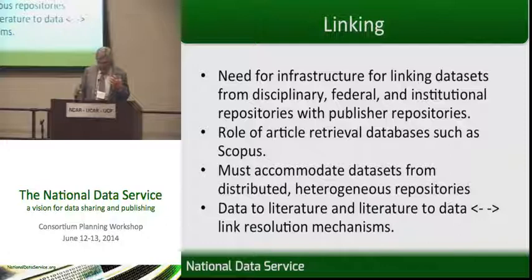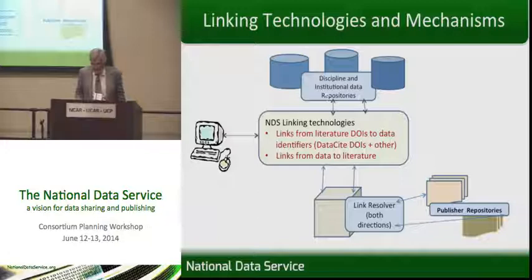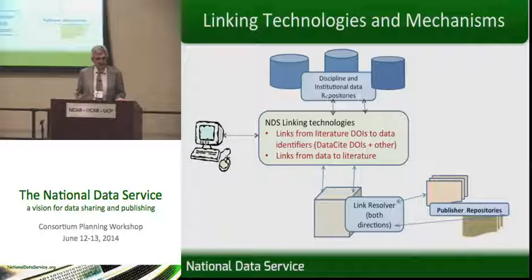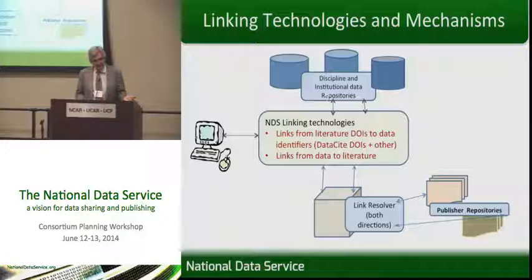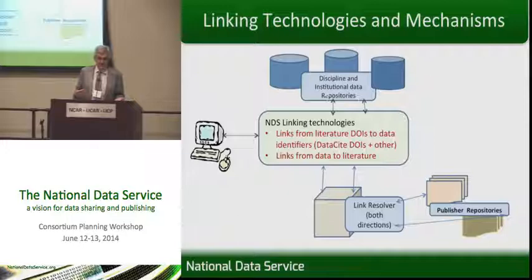What we've been talking about in a number of different settings, both this morning and in other venues, is this data-to-literature and literature-to-data bi-directional link resolution mechanism. The centerpiece is our link resolver attempt — our attempt to generate a link resolver that connects DataCite DOIs and CrossRef DOIs. We actually started this project when we realized we couldn't just search CrossRef to locate DOIs. We have a project we call Journal and Article Locator, and we're now searching DataCite and CrossRef, and we've begun building this handles-type server to link those DOIs.